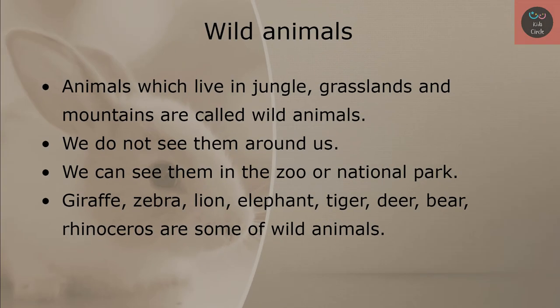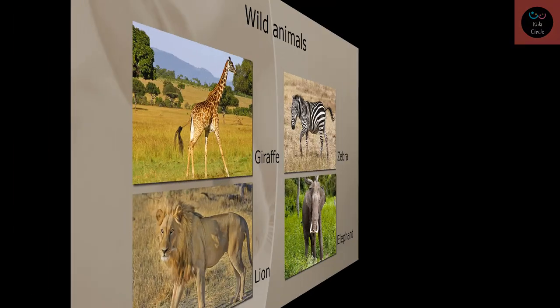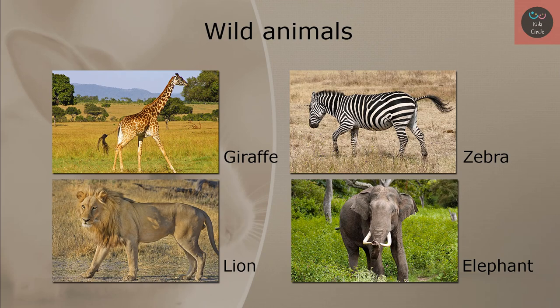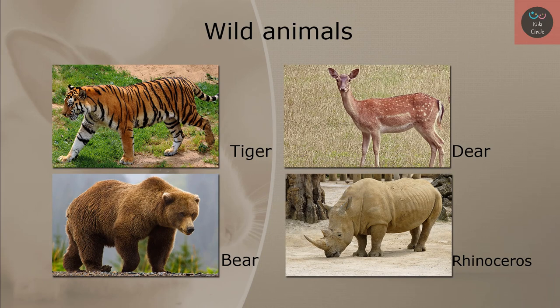Wild animals. Animals which live in jungles, grasslands, and mountains are called wild animals. We do not see them around us. We can see them in the zoo or national park. Giraffe, zebra, lion, elephant, tiger, deer, bear, and rhinoceros are some wild animals.